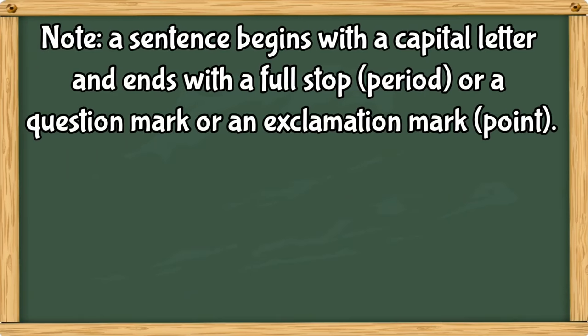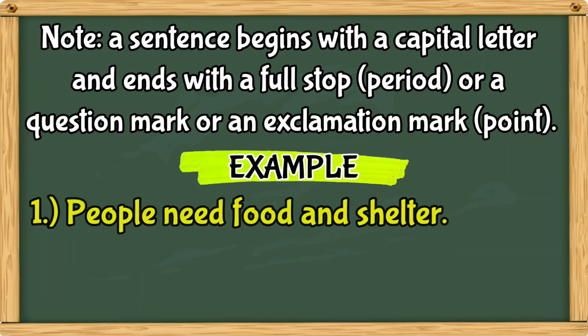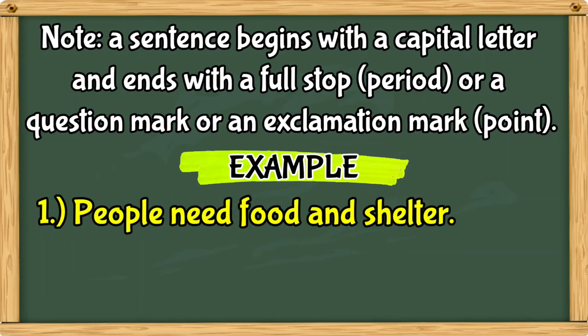Take note. A sentence begins with a capital letter and ends with a full stop or period, or a question mark, or an exclamation mark or point. For example, people need food and shelter. The sentence begins with a capital letter and ends with a period.